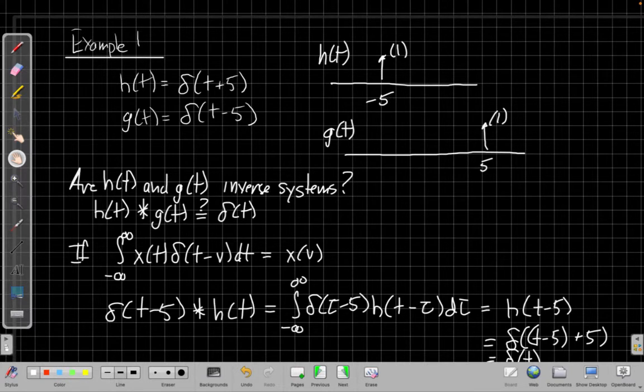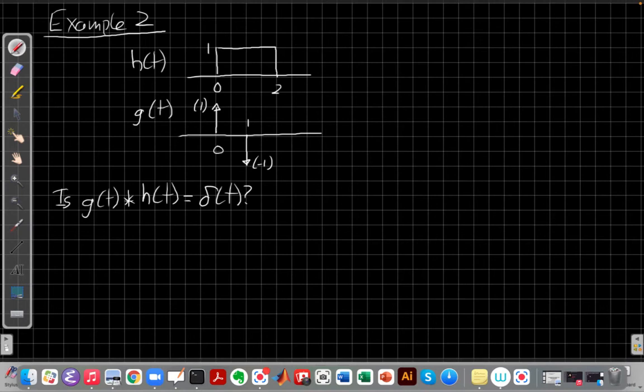How about we'll look at one more example and then wrap up here. When I convolve, for this case, I have h(t) is a rectangular pulse that goes from zero to two, and g(t) is the signal that I get with an impulse at time zero and a negative impulse at time one. So if I run something through h(t) and then through g(t), do I get back to the original system?